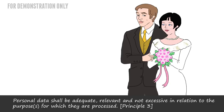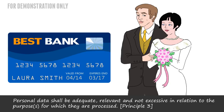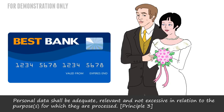Recently, Laura got married and took her husband's name. So data about her surname and marital status need to be updated, because data must be accurate and, where necessary, kept up to date.